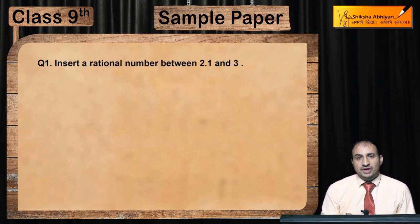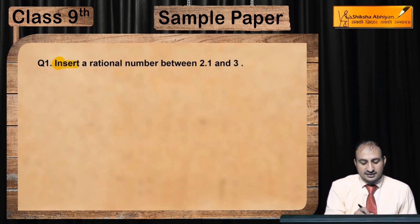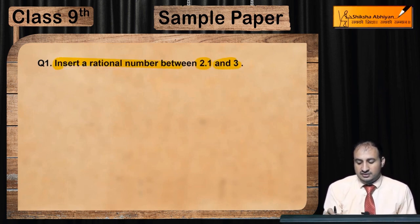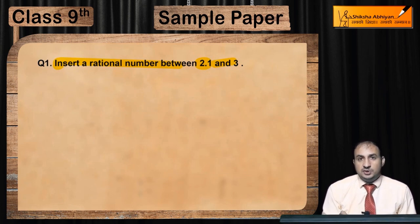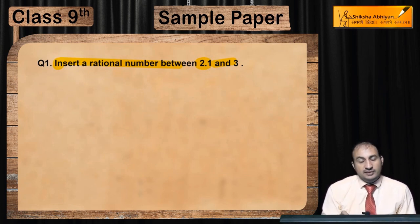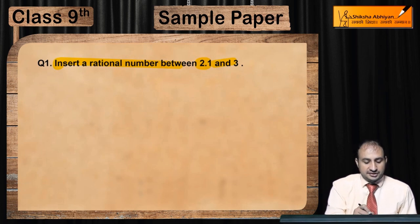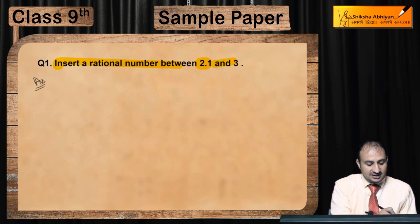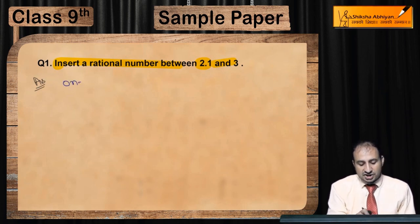Question one: insert a rational number between 2.1 and 3. This is a one-mark question, so we will give a short, one-line answer — one rational number between 2.1 and 3.